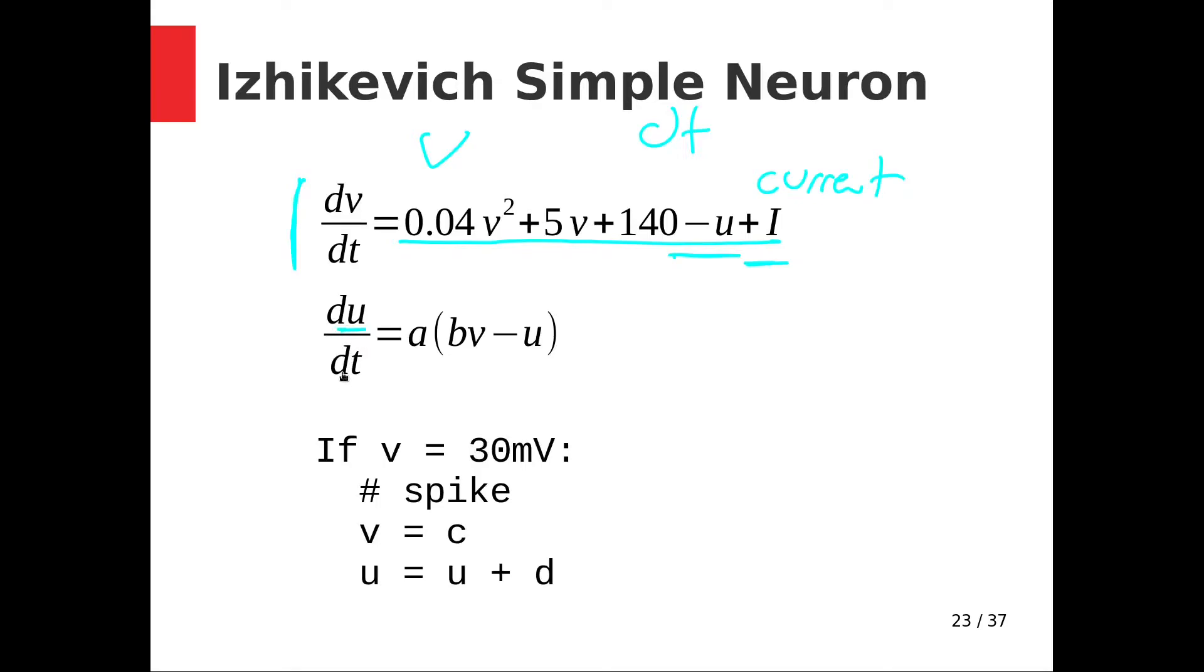And then we have this du dt, which has all of these arbitrary constants in it. So u is another variable. This is how u evolves in time as we step. And we notice that u also depends on v. So the change in v at any given time step depends on u, and the change in u at any given time step depends on v.